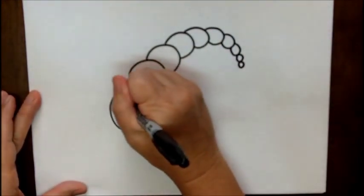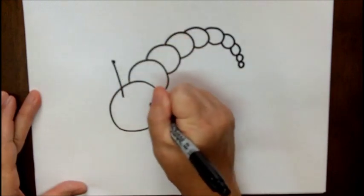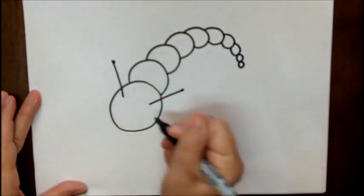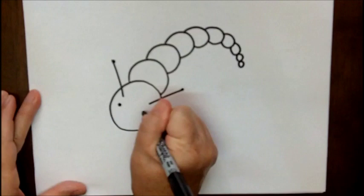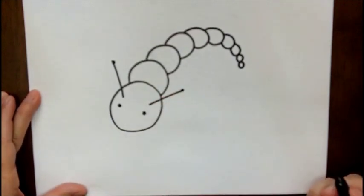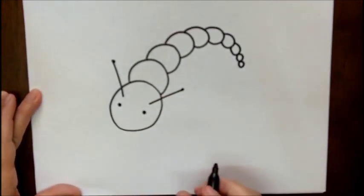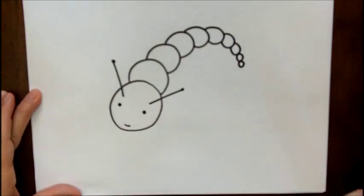Then we'll put some little antenna on him. Some eyes. You want to put some glasses on him? That would be cool. Little smile.